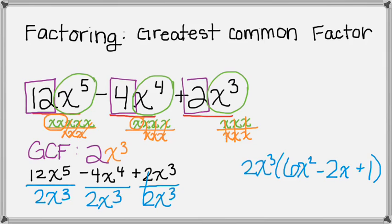And with all of the techniques for factoring, the final step in terms of how you can actually check your work would be to actually just go through and do the multiplication again. So if I do the multiplication, 2x cubed times 6x squared is 12x to the 5th.